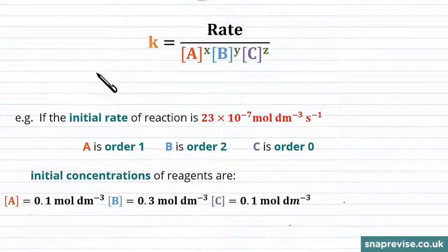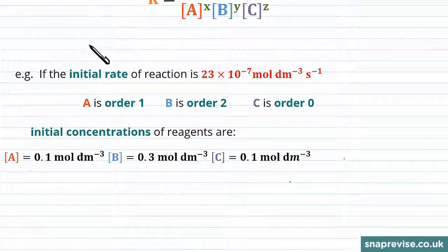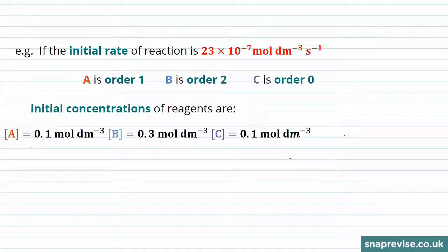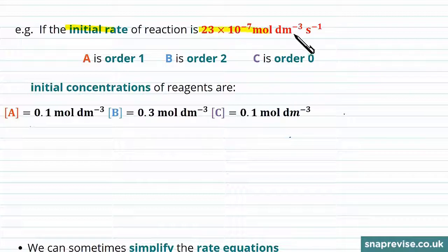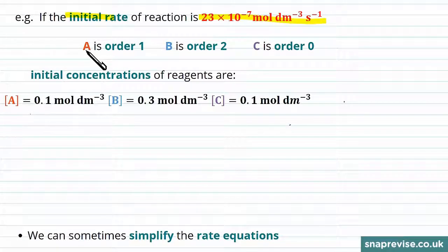So let's look at an example of calculating the rate constant K. We're told that the initial rate in a reaction is 23 times 10 to the minus 7 moles per decimetre cubed per second. And reactant A is order 1, reactant B is order 2, and reactant C is order 0.